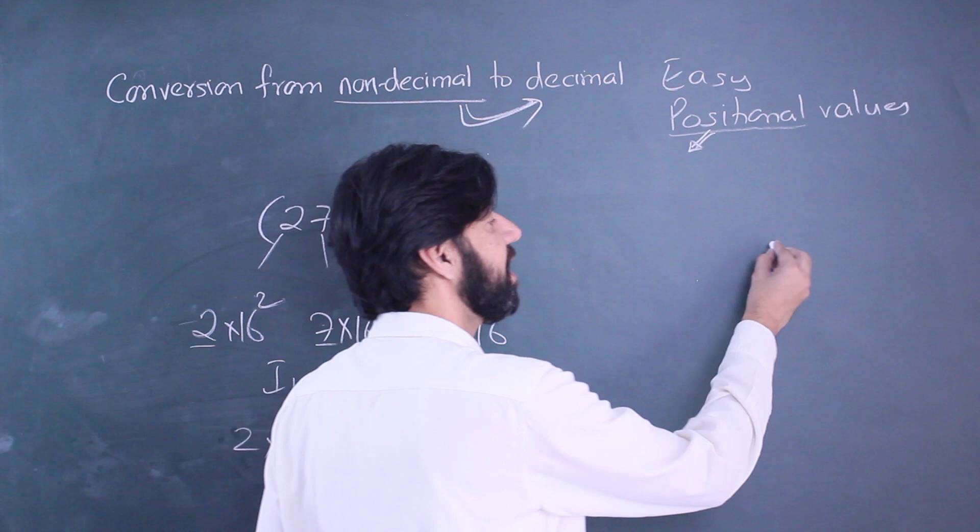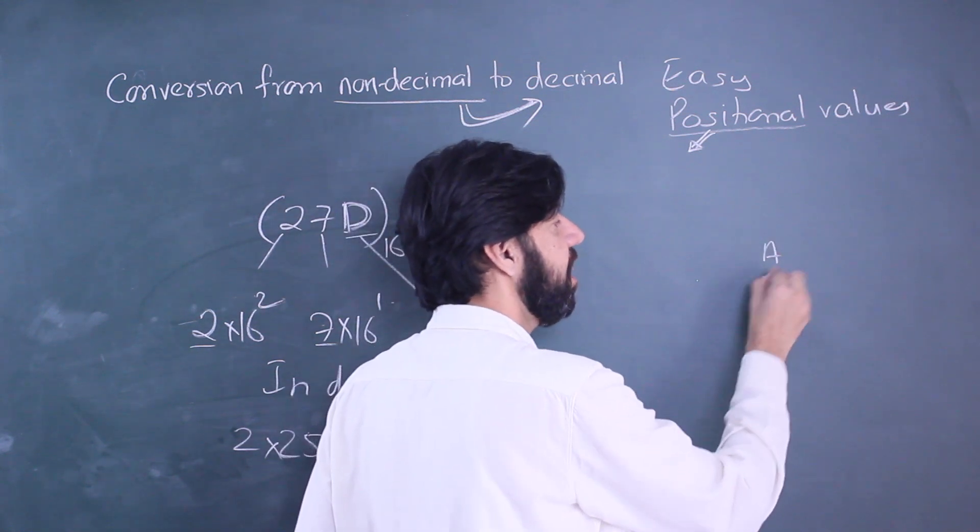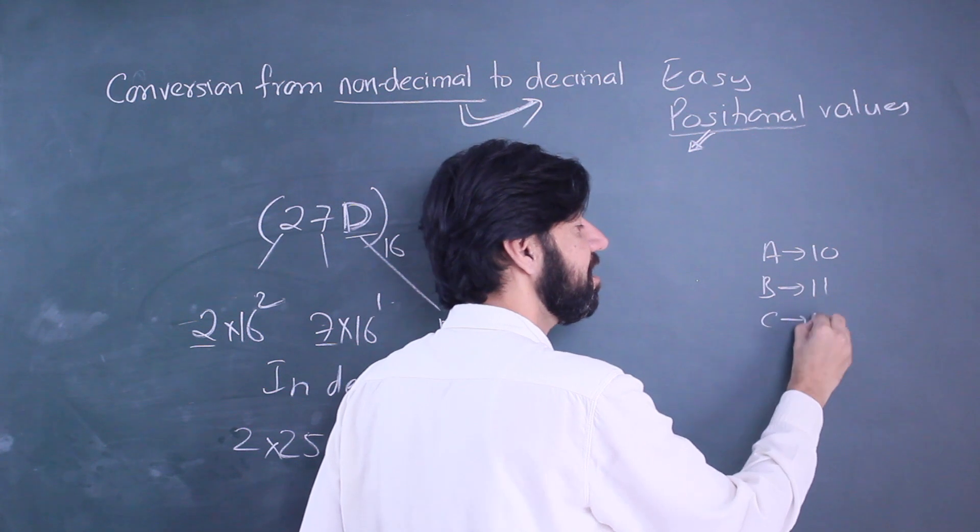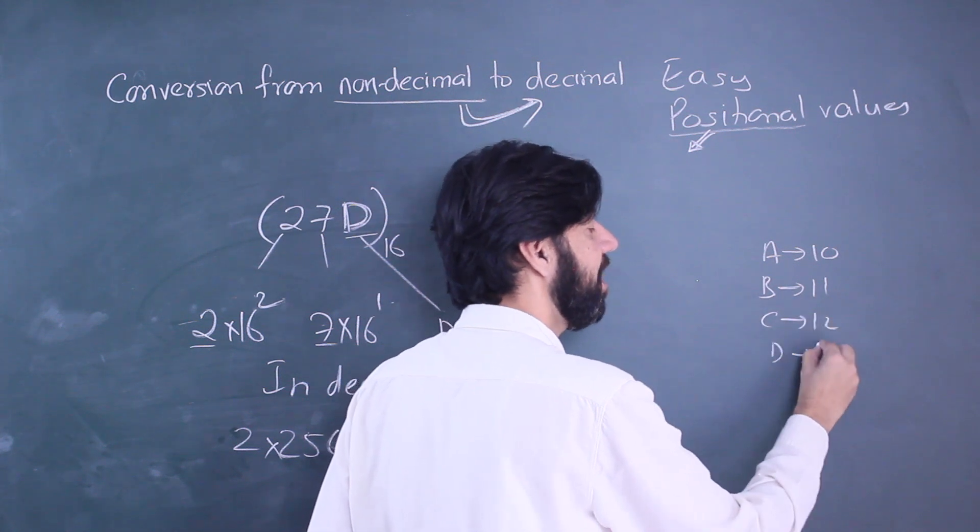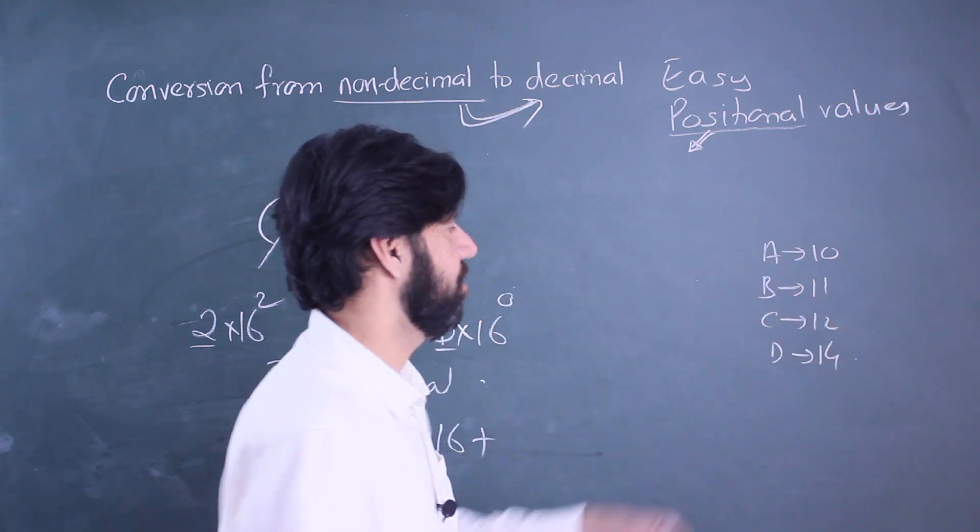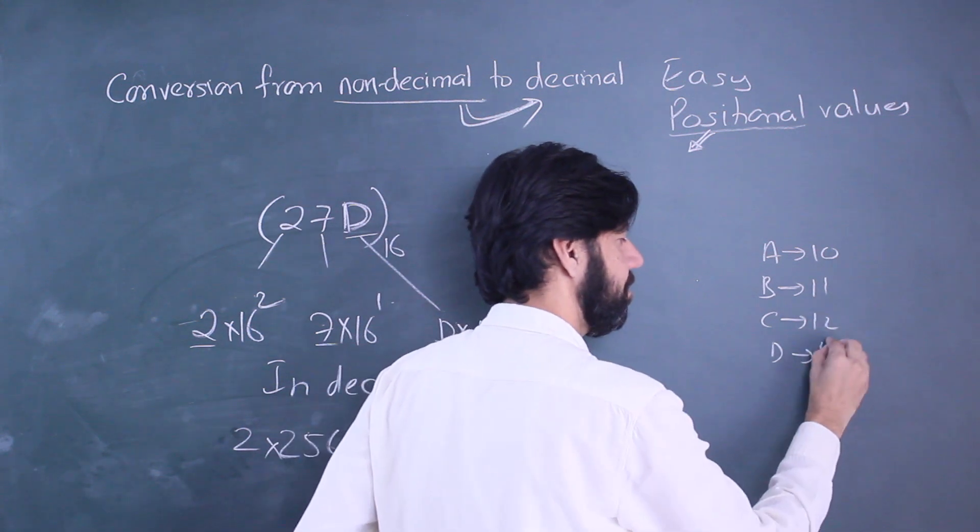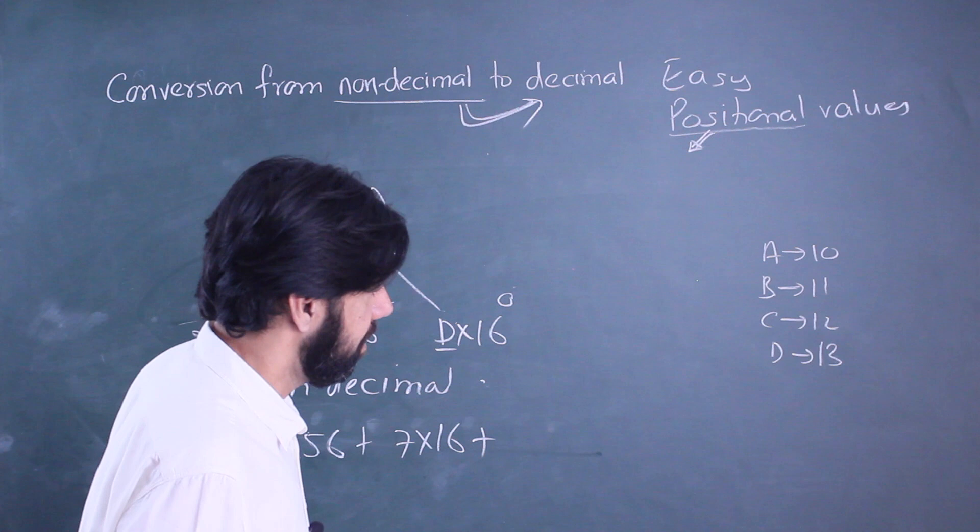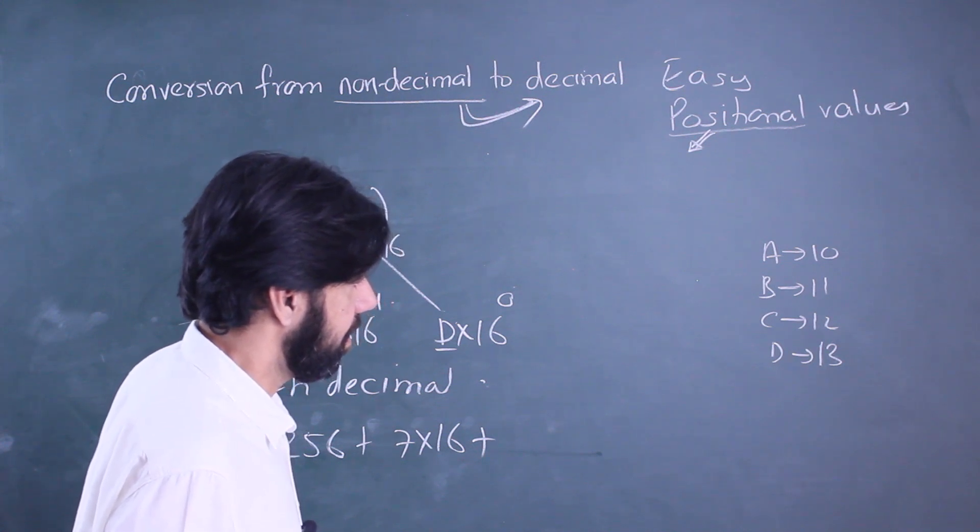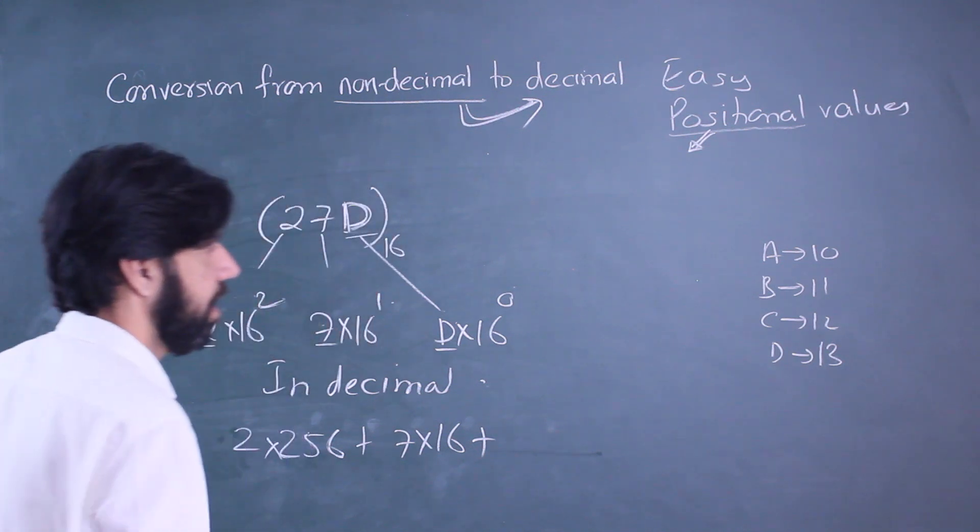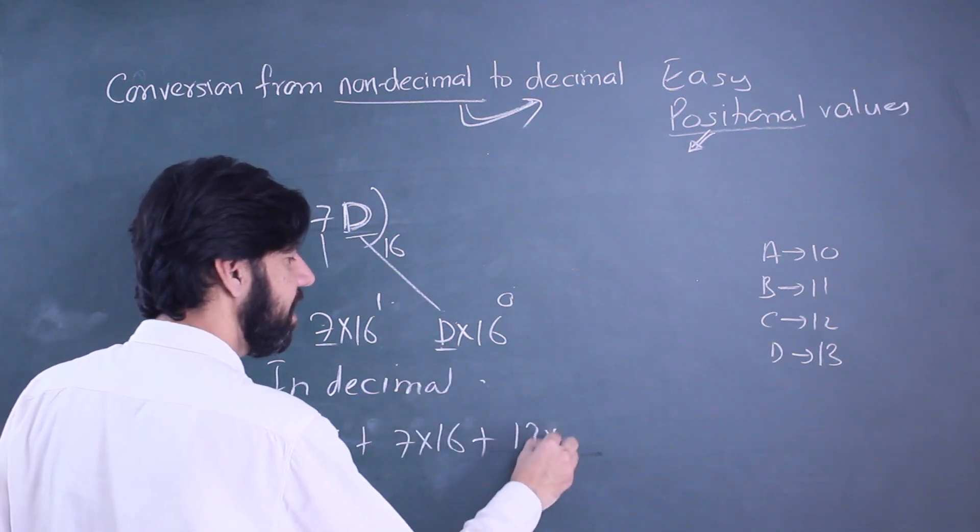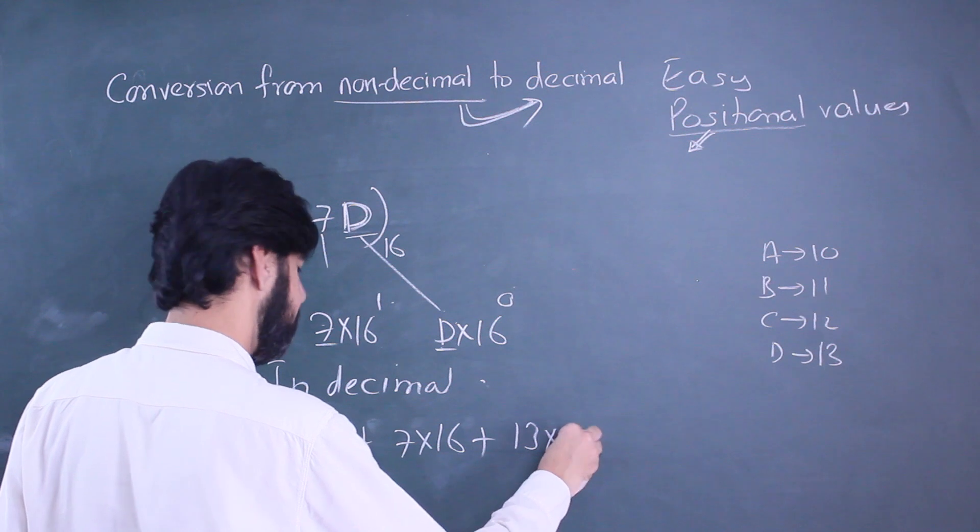Now what do you do with D? Beginners might have to go back to the margin. A is nothing but 10, B is 11, these are the decimal equivalents, D is 13. So D is going to be 13 into 16 raised to 0, that's a 1.